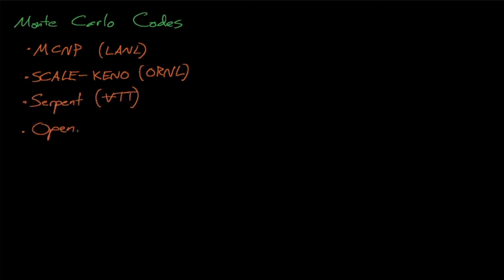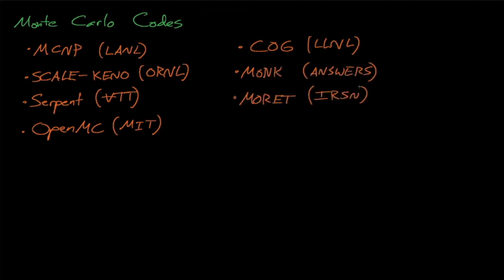Some commonly used Monte Carlo codes include the MCNP code from Los Alamos National Laboratory, the Keno code within the SCALE code package from Oak Ridge National Laboratory, the Serpent code from VTT in Finland, the research-focused OpenMC code from MIT, the COG code from Lawrence Livermore National Lab, the MONK code from Answers in the UK, the Moray code from the IRSN in France, and the Tripoli code from the CEA in France.